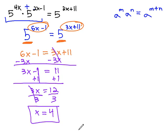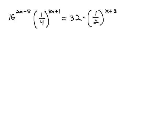So, by using this exponent property that we can add the exponents on a common base, we could combine the two fives into a single 5. But let's stretch that idea to a more involved problem, where we have 16 to the 2x minus 5 times 1 fourth to the 3x plus 1, equals 32 times 1 half to the x plus 3.